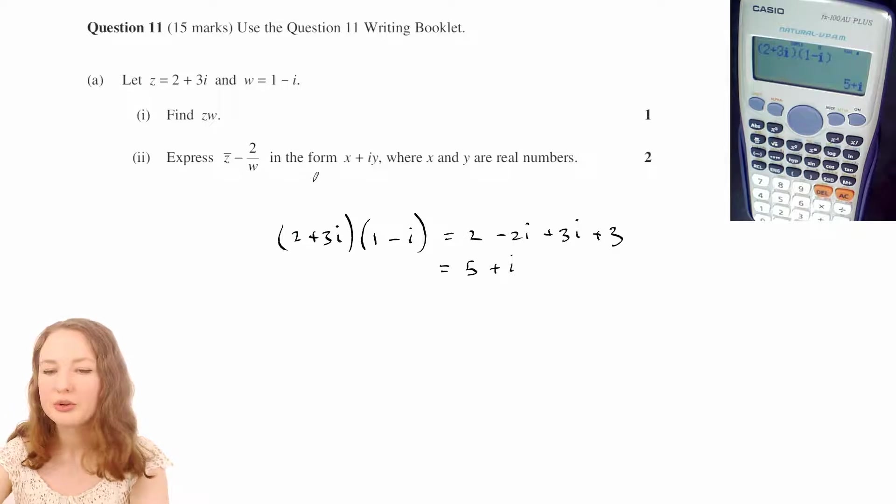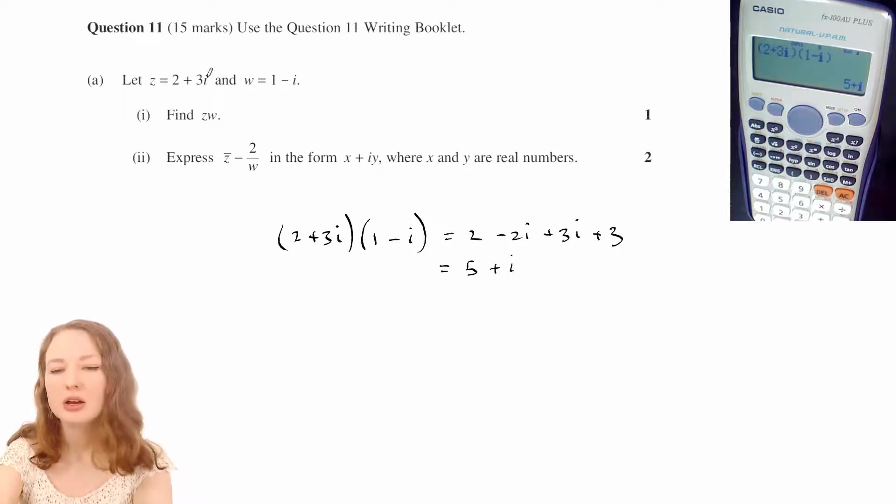Okay, let's go into part 2. So that's the complex conjugate of z, which is just like replacing i with minus i, so when we take the conjugate, it becomes 2 minus 3i.